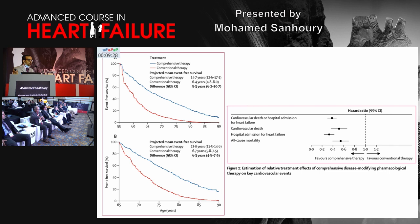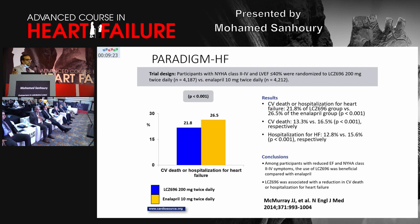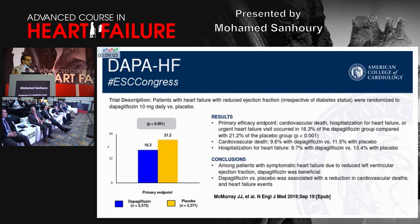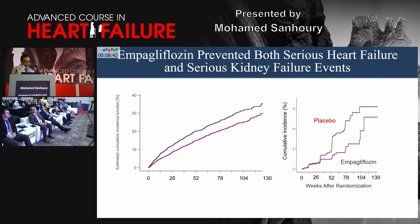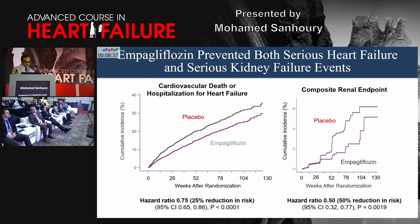The PARADIGM-HF trial proved that sacubitril/valsartan is superior to enalapril twice daily in reducing cardiovascular deaths and hospitalization in heart failure patients, which is why it is guideline-recommended. The DAPA-HF trial proved that dapagliflozin 10 mg daily versus placebo improved the composite endpoint of cardiovascular deaths and heart failure hospitalization. Similarly, the EMPEROR-Reduced trial approved empagliflozin versus placebo, improving mortality, cardiovascular hospitalization, and renal events.